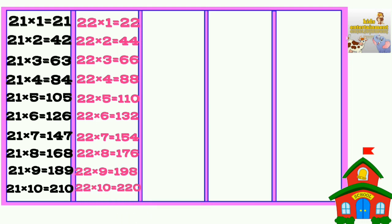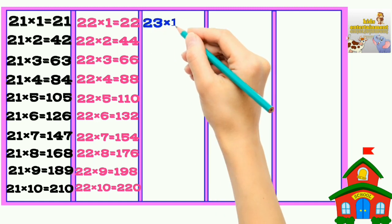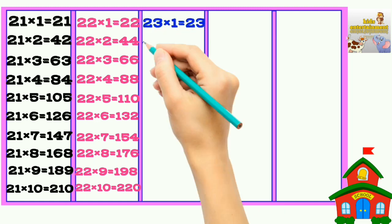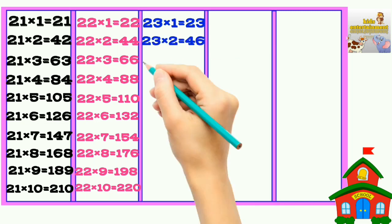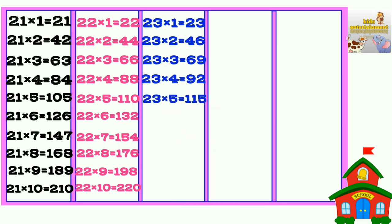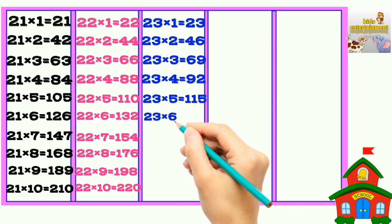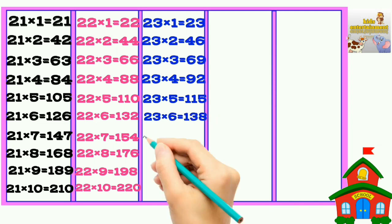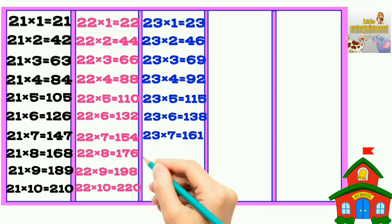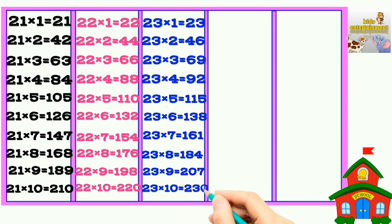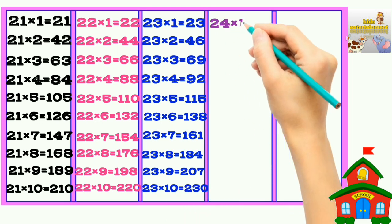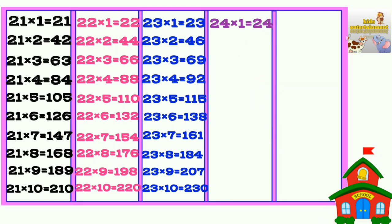22 times 10 is 220. 23 times 1 is 23, 23 times 2 is 46, 23 times 3 is 69, 23 times 4 is 92, 23 times 5 is 115, 23 times 6 is 138, 23 times 7 is 161, 23 times 8 is 184, 23 times 9 is 207, 23 times 10 is 230.